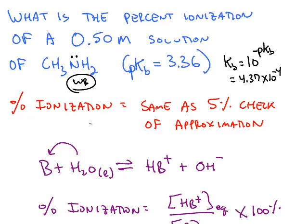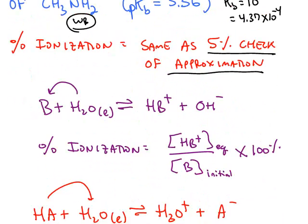Calculating the percent ionization is nothing new. That's exactly the same thing we've been doing when we do the 5% check. For example, putting a base into water accepts a proton and forms ions, HB plus and OH minus. Percent ionization is how much HB plus cation we make at equilibrium divided by the initial amount of B times 100%.